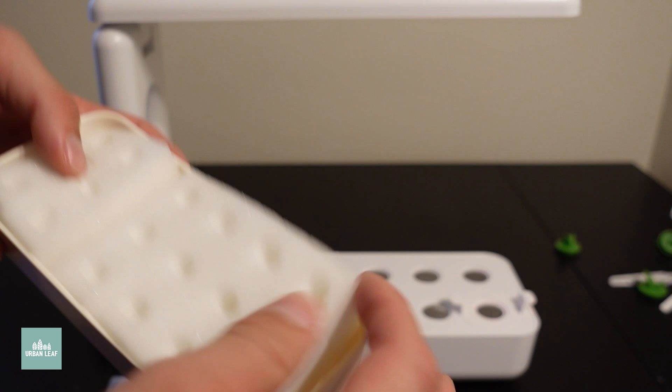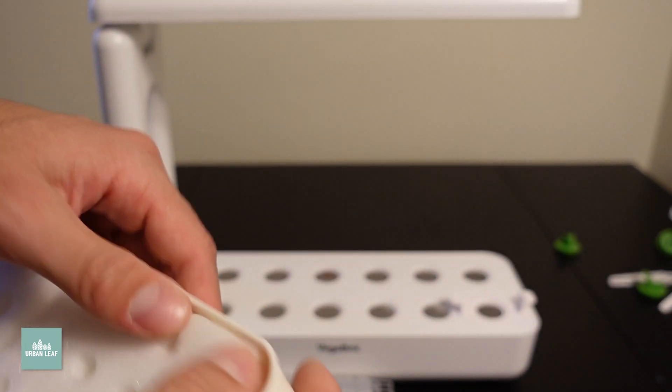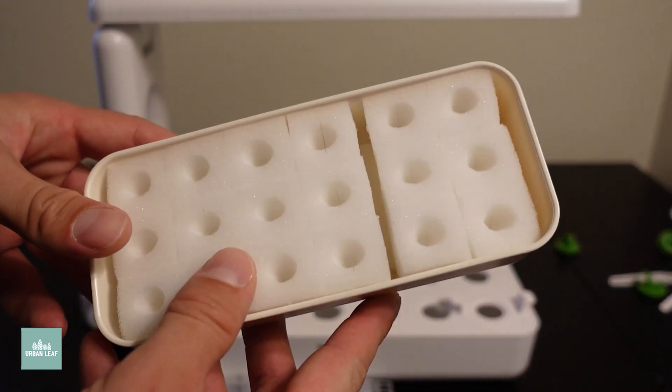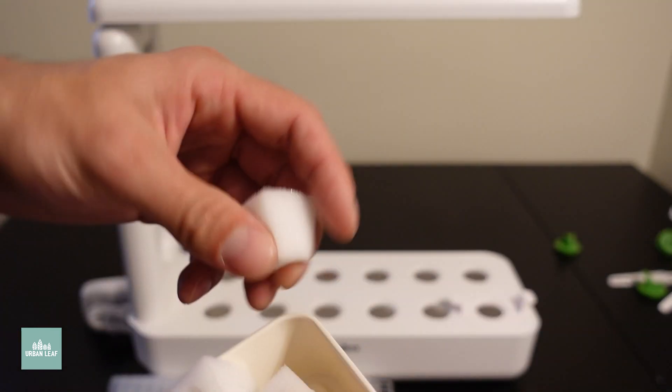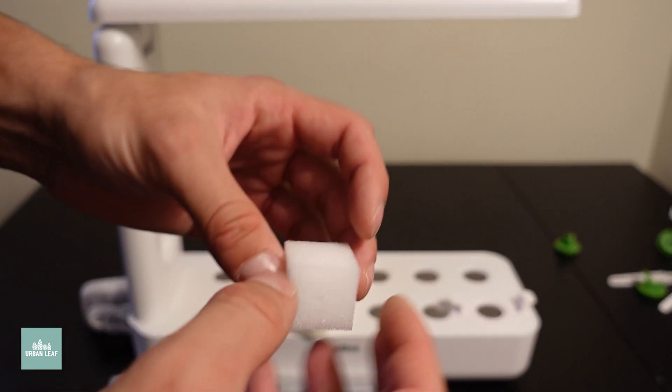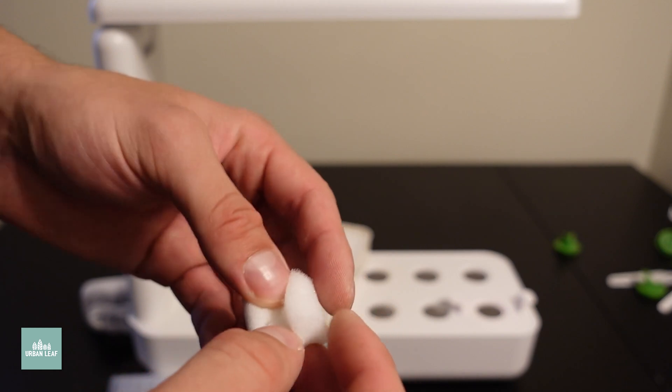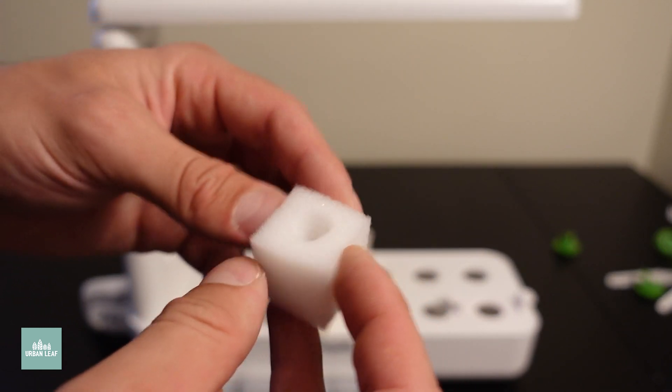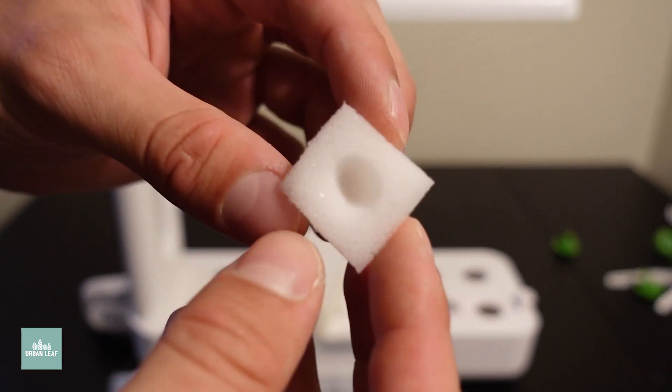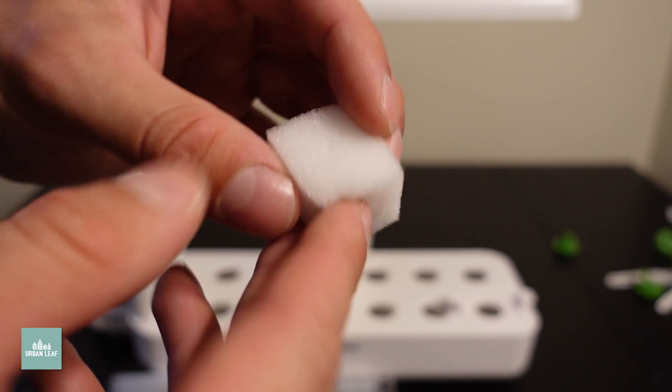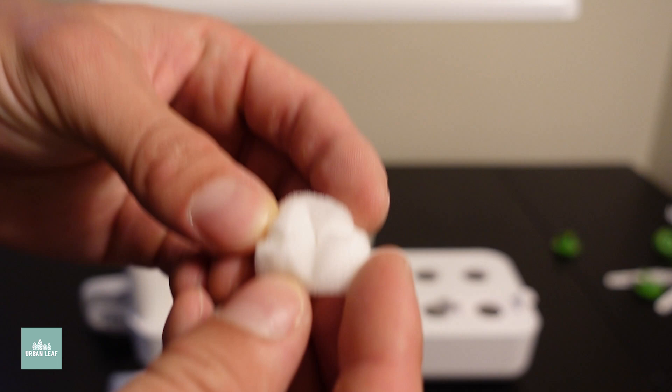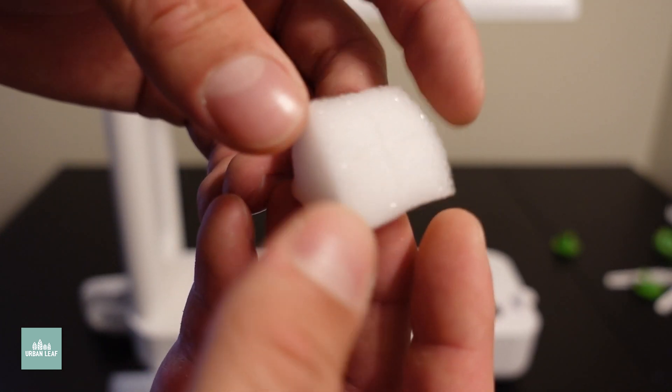Foam grow cubes are not necessarily new, but they are generally just used for germination of nursery seedlings and propagation of small cuttings. There is a divot, put your seed in, and then it's sliced underneath to allow the plant's roots to grow through, as you can see there, in kind of a cross.